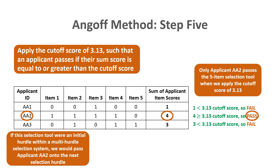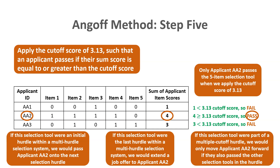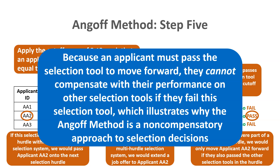If this selection tool were an initial hurdle in a multi-hurdle system, applicant AA2 would move to the next hurdle. If it were the last hurdle, AA2 would receive a job offer. If it were part of a multiple cutoff hurdle, AA2 would only move forward if they also passed the other tools with cutoff scores. Because applicants must pass each tool to advance, they cannot compensate with performance on other tools — illustrating why the Enghoff method is a non-compensatory approach.